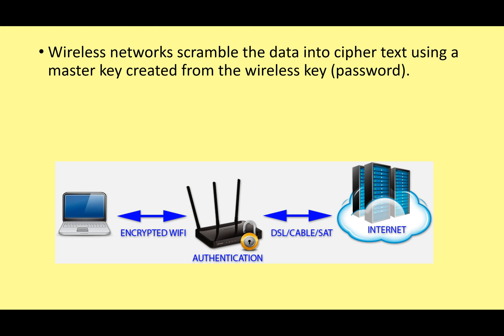Wireless networks today scramble data into ciphertext using a master key created from the wireless key — which is essentially the password we use. Data can be sent as ciphertext and then decrypted using this password. For example, when someone comes to your house and wants to use your Wi-Fi, you give them the password so they can send and receive encrypted information that is secure.